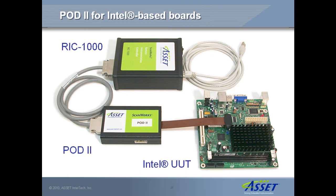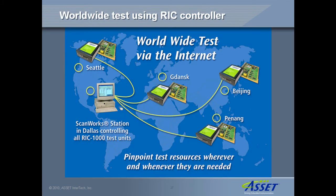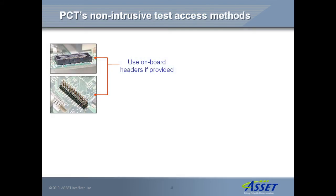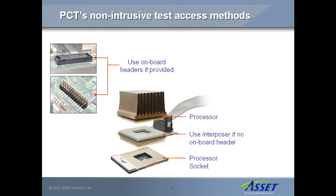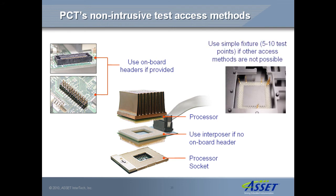LAN or Internet connected RIC controllers allow the host computer to be sited in a different location from the boards being tested. So, for example, test developers based in the US could modify and perform tests on boards located at their contract manufacturer's site in China. The PCT hardware connects to the UUT either through an onboard header, by using an interposer if no onboard header is provided, or via a simple fixture if other access methods are not possible.